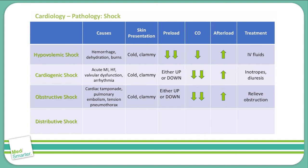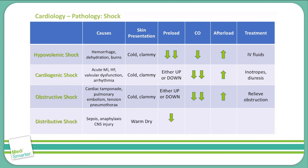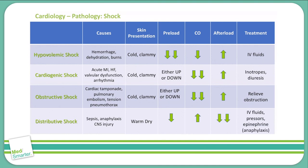The final type of shock is distributive shock, caused by sepsis, anaphylaxis, and central nervous system injuries. This is the only type with a different skin presentation — the skin will be warm and dry. Preload in distributive shock is decreased, whereas cardiac output will typically be increased, though there is an opportunity for decreased cardiac output especially in CNS injuries. In both cases, we will see a decrease in our afterload. Treatment includes IV fluids, pressors to increase afterload, and epinephrine for anaphylaxis.